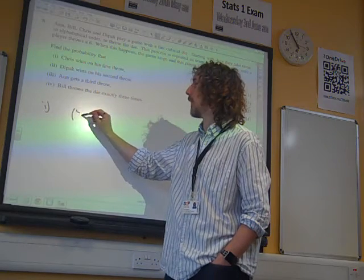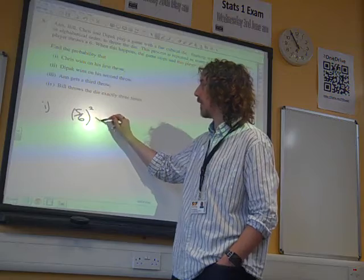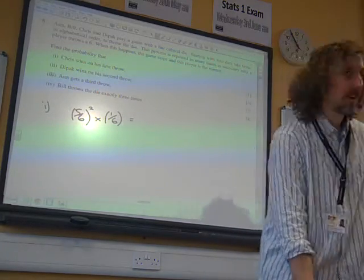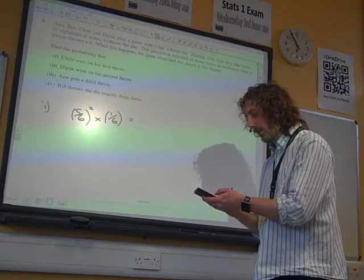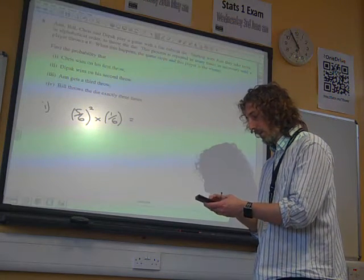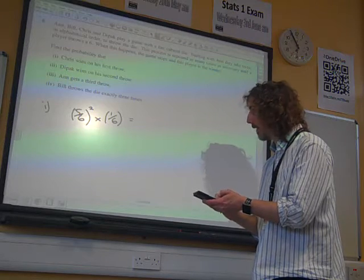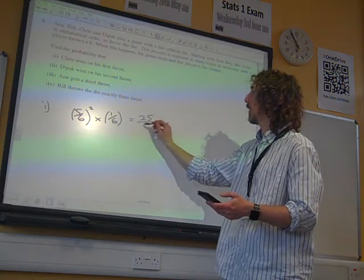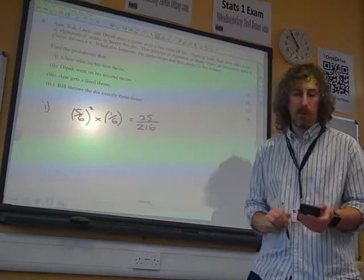Five-sixths. We need to have had five-sixths, and five-sixths, followed by Chris winning, which is a sixth. And we can see already our geometric distribution emerging. Five-sixths squared times one over six gives us 25 over 216.